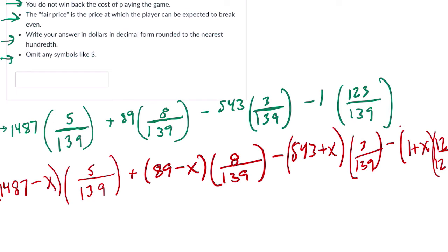Now, unfortunately, especially for this problem right here, I can't pull up my calculator on the screen. So, I'm going to just say what I do as I do it. First, we have 1487 times 5 over 139. I put 5 over 139 in parentheses. It's plus 89 times 8 over 139 minus 543 times 3 over 139 and then minus 1 times parentheses 123 over 139.